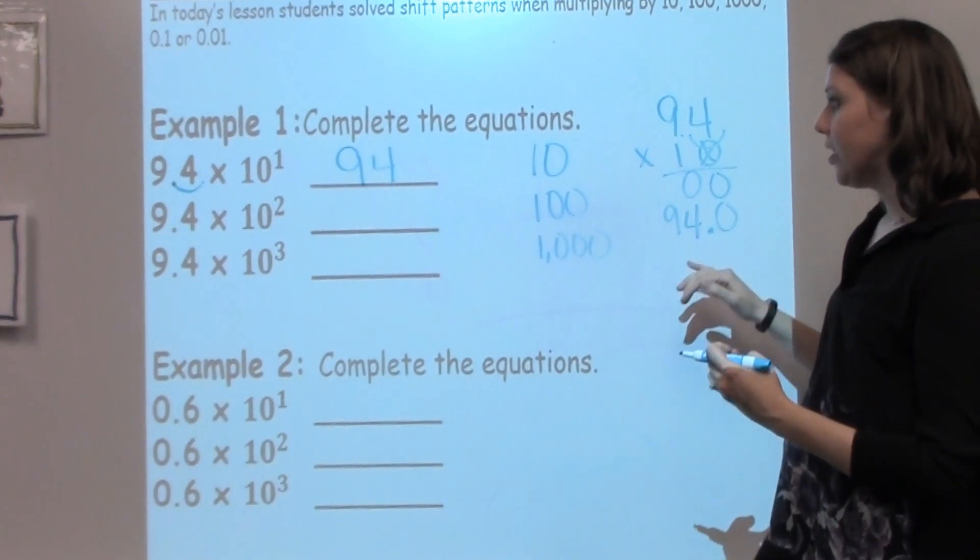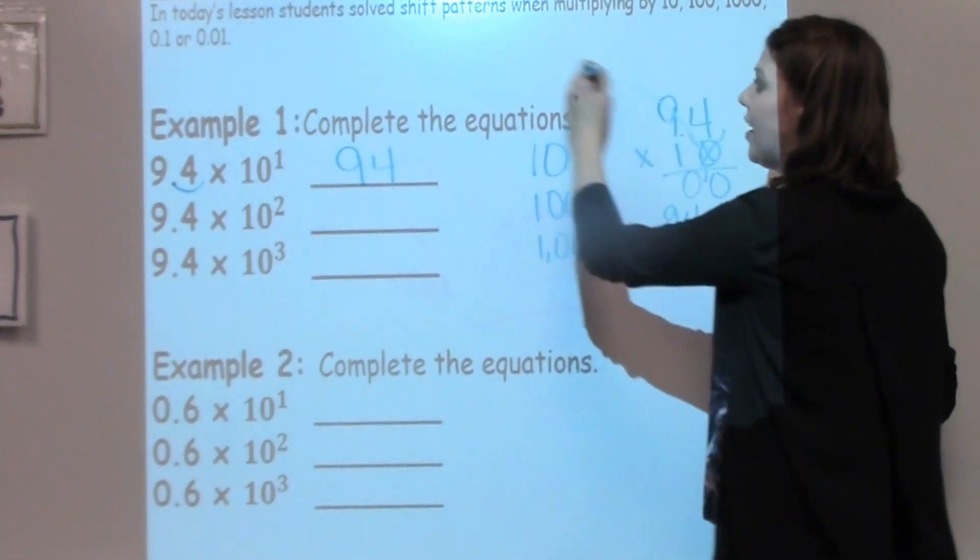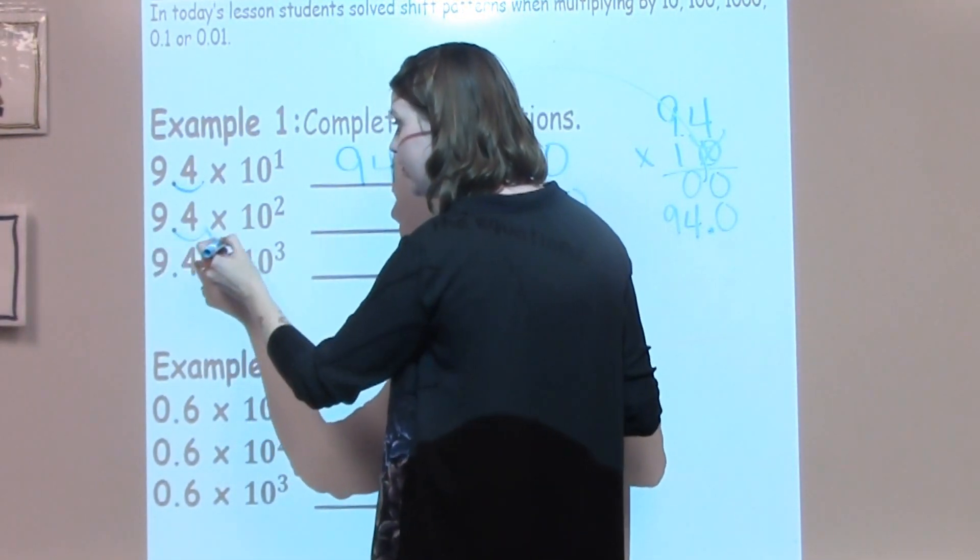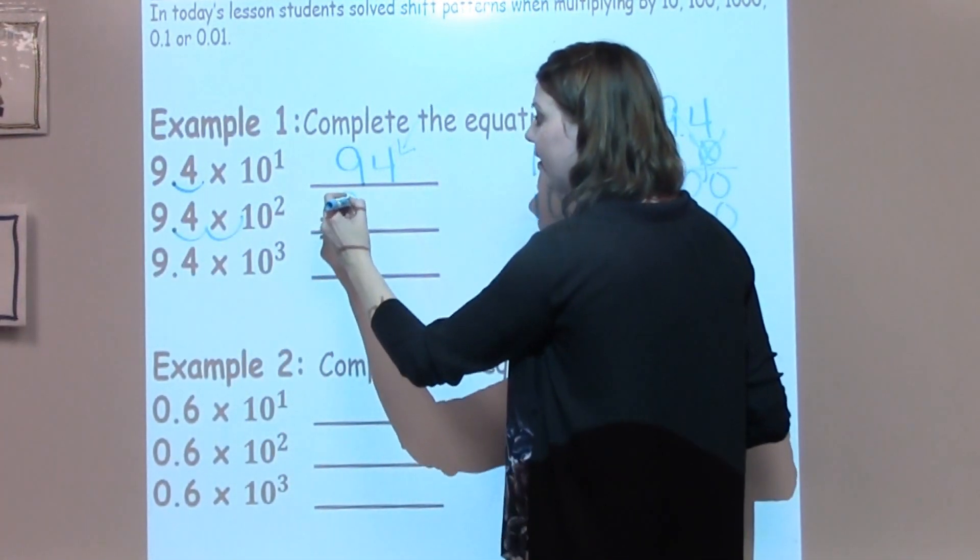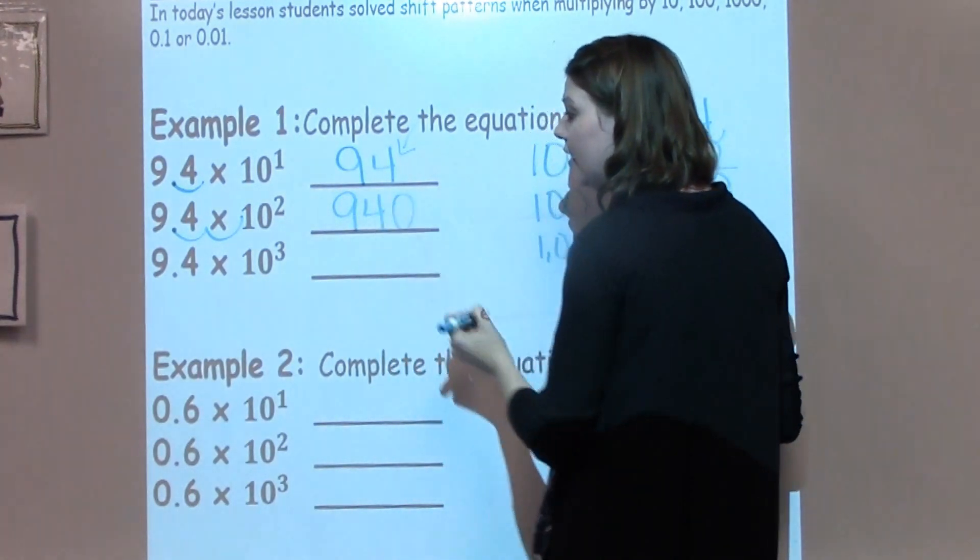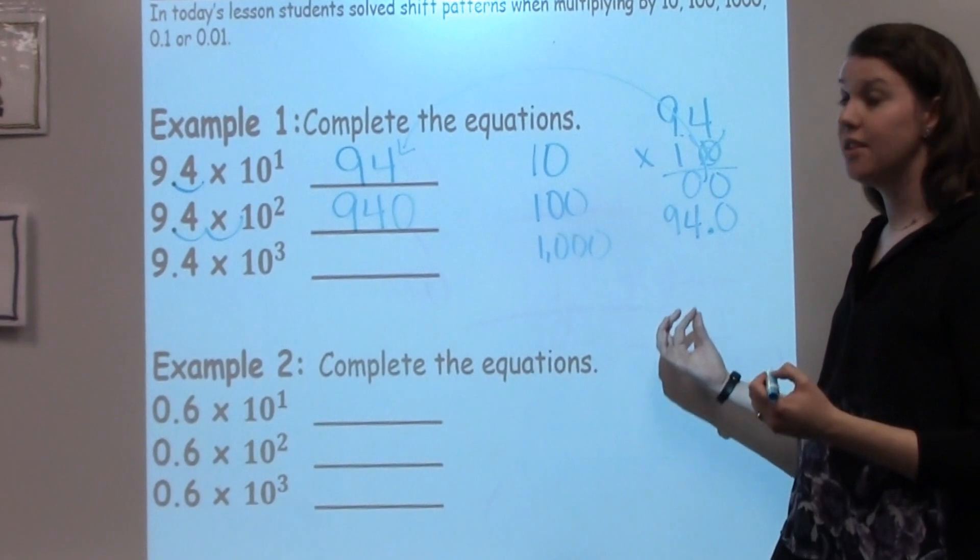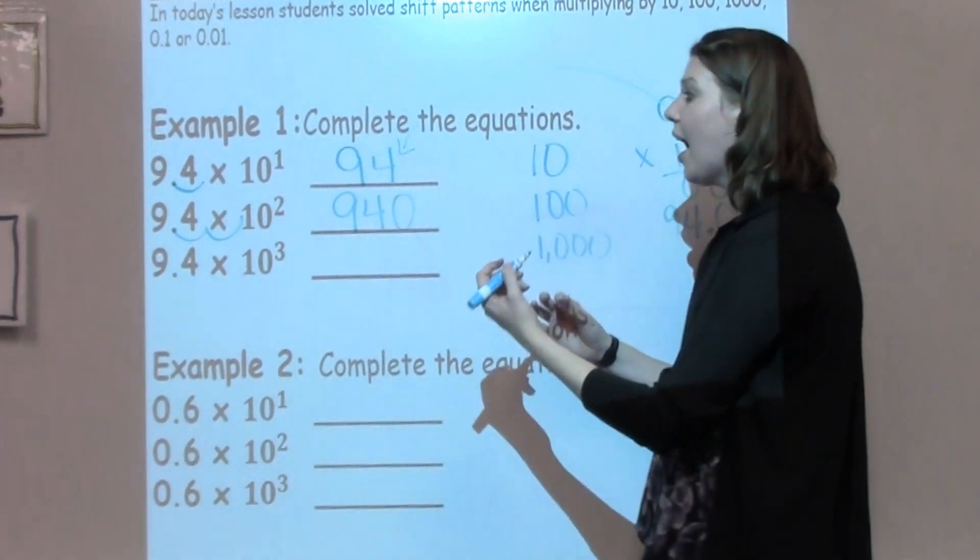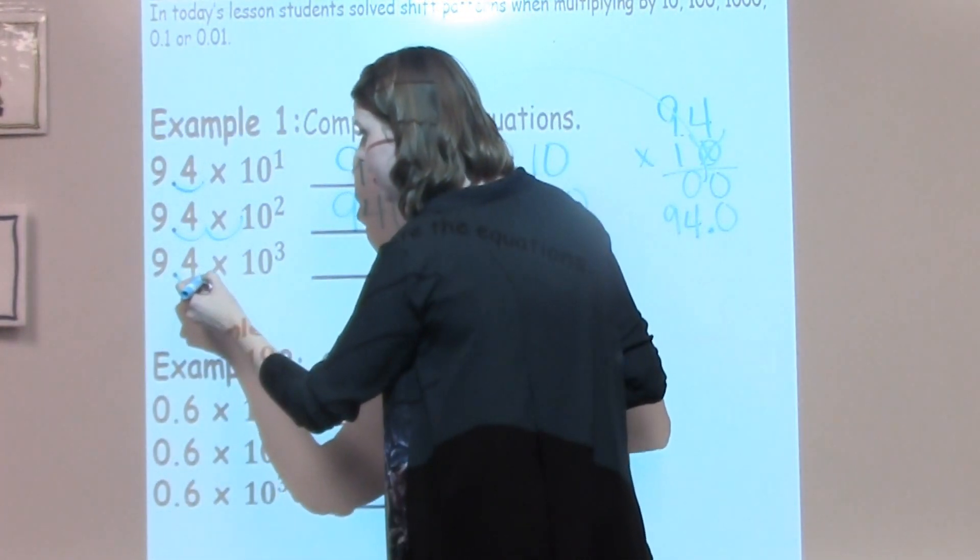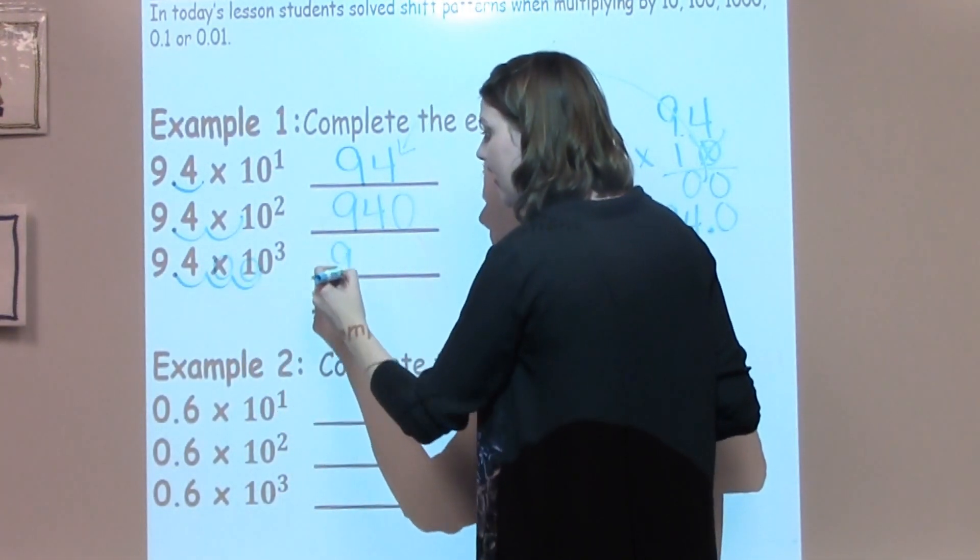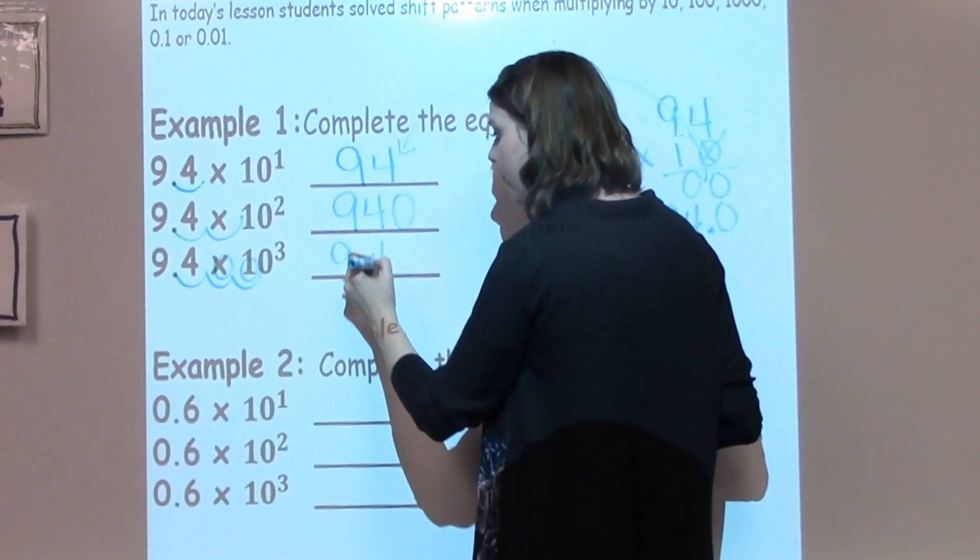So on this next question, since I've solved this one and I've proved my answer right here, I can go ahead and just move this one 1, 2 hops for an answer of 940. On this one, I'm going to take 9.4 times 10 to the third power, which is the same as 1,000. I know I'm going to shift it 1, 2, 3 hops. So I'm going to fill those in with zeros. So I've got 9,400.